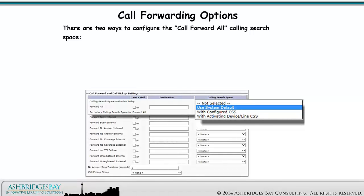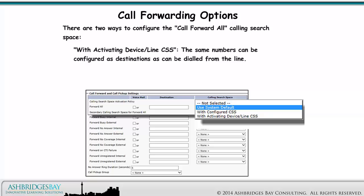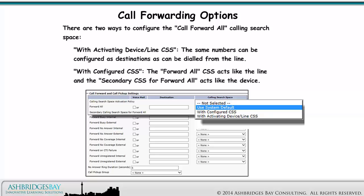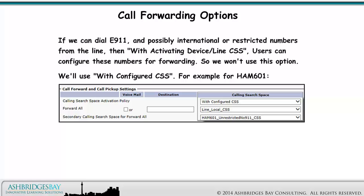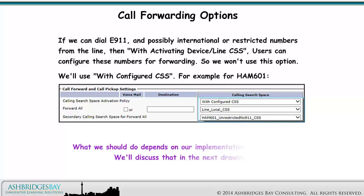There are two ways to configure the call forward all calling search space. With activating device line calling search space, the same numbers can be configured as destinations as can be dialed from the line. With configured calling search space, the forward all calling search space acts like the line and the secondary calling search space for forward all acts like the device. If we can dial E911 and possibly international or restricted numbers from the line, then with activating device line CSS users can configure these numbers for forwarding, so we won't use this option. We'll use with configured calling search space — for example, for Hamilton 601. What we should do depends on our implementation of mobility.